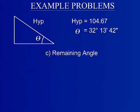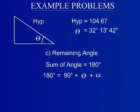Lastly, solve for the remaining angle of the triangle. Because this is a right triangle, two angles are already known: 90 degrees, the right angle, and theta, the angle given. It is also a known property that the interior angles of a triangle must add up to 180 degrees.